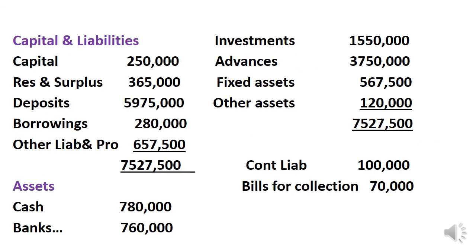Now the Balance Sheet: Liabilities side — Capital (Schedule 1), Reserves and Surplus (Schedule 2), Deposits (Schedule 3), Borrowings (Schedule 4), Other Liabilities and Provisions (Schedule 5) — five schedules. Assets side — Cash, Balances with Banks and Money at Call and Short Notice, Investments, Advances, Fixed Assets, Other Assets. Total: 75,27,000. Contingent Liabilities — Schedule 12: 1,00,000. Bills for Collection: 70,000.